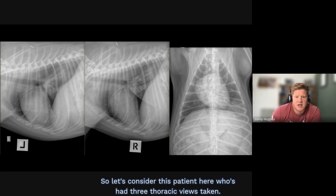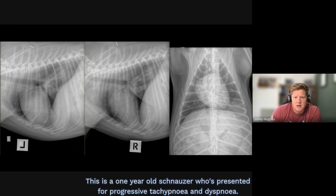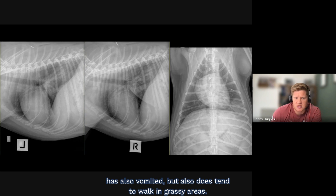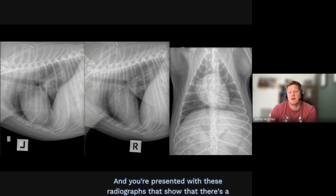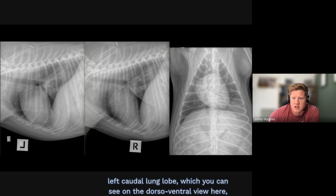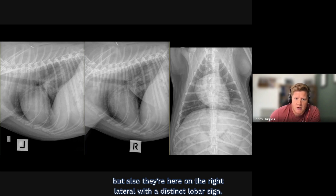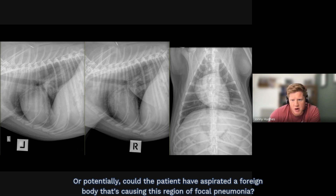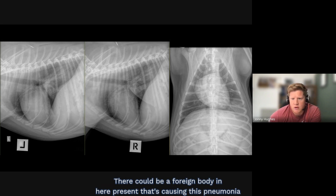Consider this patient who has had three thoracic views taken — a one-year-old Schnauzer presenting for progressive tachypnea and dyspnea. The history is that the patient has been bouncing on a trampoline, has vomited, and tends to walk in grassy areas. The radiographs show a wedge-shaped region of alveolar pattern localized to the left caudal lung lobe, visible on the dorsoventral view and on the right lateral with a distinct lobar sign. The question is whether this is simple pneumonia or whether the patient aspirated a foreign body causing this focal pneumonia. The radiographs have limitations — a foreign body could be present causing the pneumonia but simply not visible.